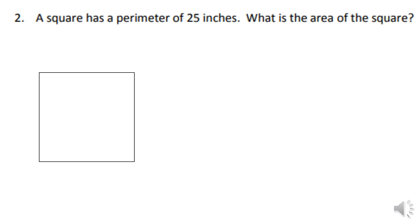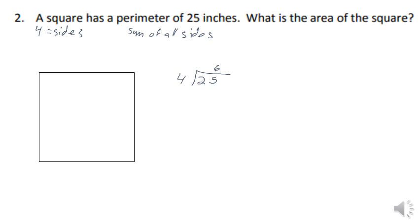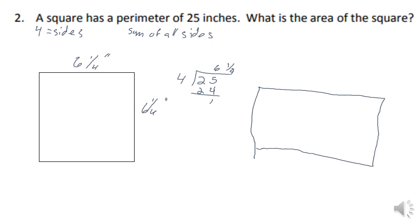A square has a perimeter of 25 inches — what is its area? A square has four equal sides, and the perimeter is the sum of all sides. So I divide 25 by 4: that gives 24 remainder one, so each side is six and one-quarter inches. Now to find the area, I multiply length times width — both sides are six and one-quarter inches.